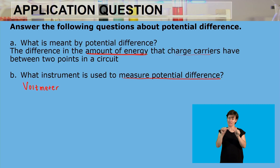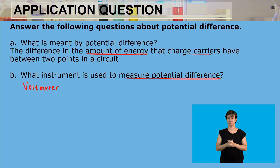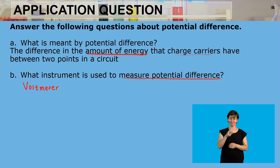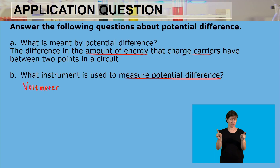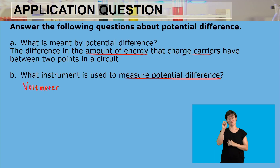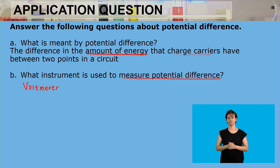We use a voltmeter to measure potential difference, and that potential difference is measured in volts, denoted by capital letter V.